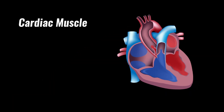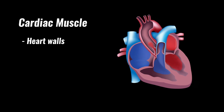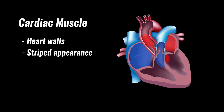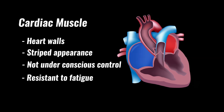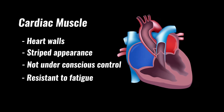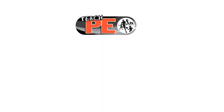Cardiac muscle is found solely in the walls of the heart. It has similarities with skeletal muscles in that it has a striped appearance, and with smooth muscles in that its contractions are not under conscious control. Cardiac muscle is highly specialized and resistant to fatigue. This is due to the presence of a large number of mitochondria, myoglobin, and a good blood supply.